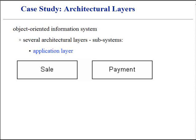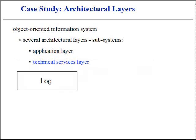The application layer fulfills application requirements. The technical services layer covers general purpose objects and related subsystems. They provide supporting technical services, such as interfacing with a database or error logging facility. These services are usually application-independent and reusable across several systems.